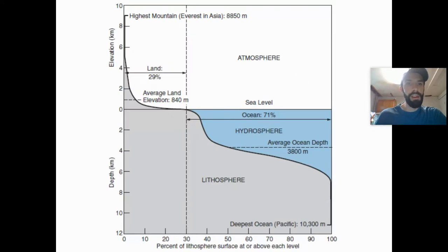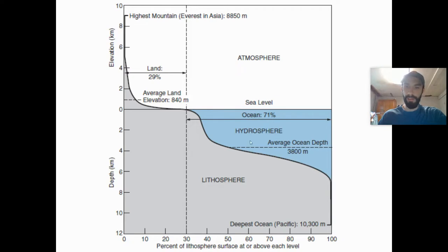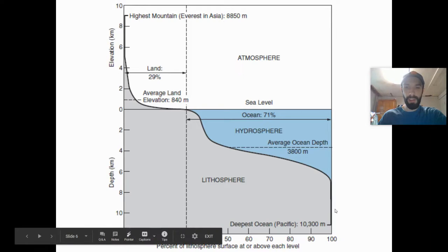This diagram shows the average ocean depth as well as the average land depth. Most of the ocean is unexplored territory — it's really deep and vast. Most of the ocean is at a depth of 3,800 meters, which is not easily explored. The deepest parts of the oceans are in the trenches — the Marianas Trench is the deepest part, located in the Pacific.